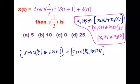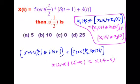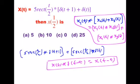Now, by applying the impulse property of convolution: x(t) convolution with δ(t minus a) equals x(t minus a). This is the impulse convolution property. Here, x(t) is the rectangle function and δ(t minus a) is the impulse. Substituting means t becomes t minus a in x(t).